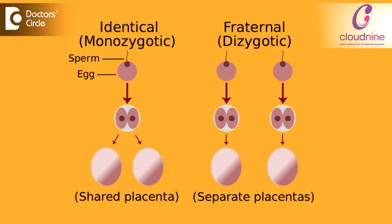In twin pregnancy, there are two types. One is dizygotic twins and the other is monozygotic twins. Zygosity refers to the number of eggs from which the baby is formed.